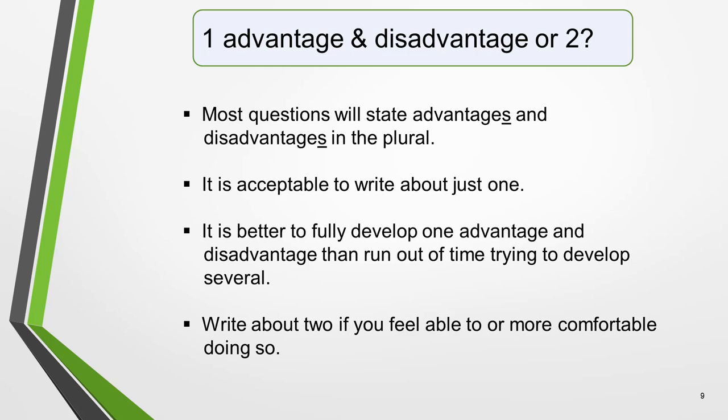The question will state advantages and disadvantages in the plural, that is, more than one. However, it is acceptable to write about just one. This should give you an essay of just over the minimum 250 words. To write about two advantages and disadvantages will require you to write nearer 400 words, which are a lot to plan and write in the 40 minutes allowed. It's better to fully develop one advantage and one disadvantage than end up with your second idea missing an explanation or an example because you run out of time. But you can write about two if you feel able to. Using essay structure two, where you start with the examples, will enable you to easily add more than one advantage and disadvantage without having to write many more words. It will be more suitable to some questions than others, so bear this in mind when writing practice essays and try out both structures.